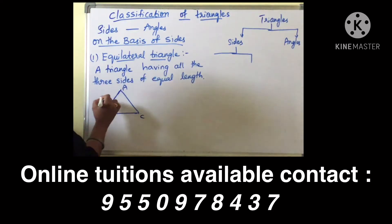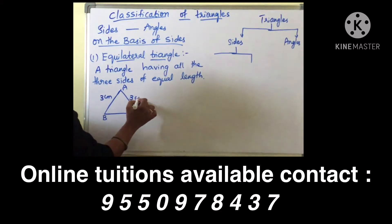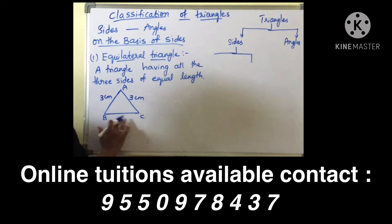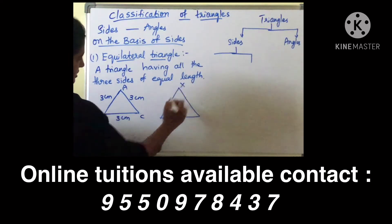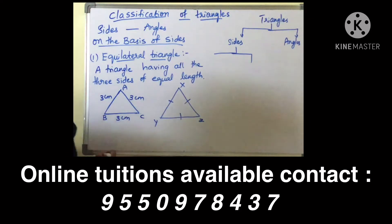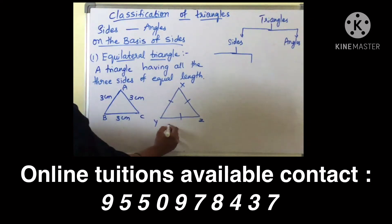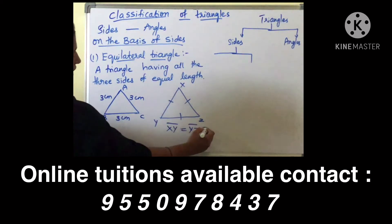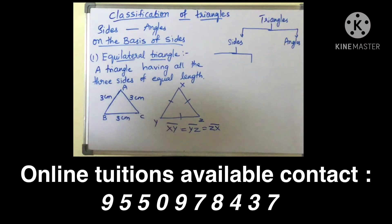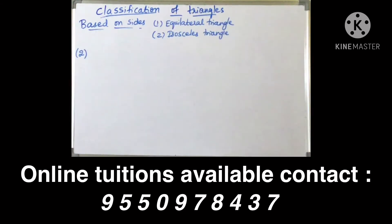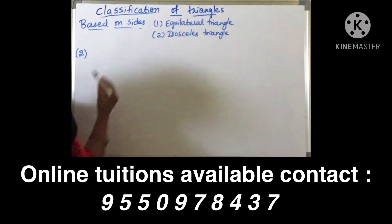The sides AB, BC, and AC are of equal length — for example, three centimetres each. So AB equals BC equals AC, all three centimetres. So this type of triangle is known as an equilateral triangle. You can also write it as triangle XYZ, where XY equals YZ equals ZX. So if the three sides of a triangle are equal, then we call it an equilateral triangle.